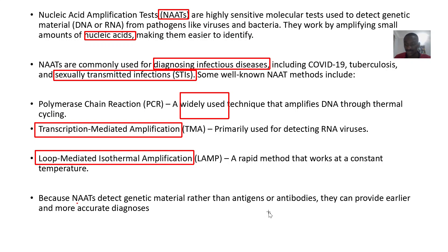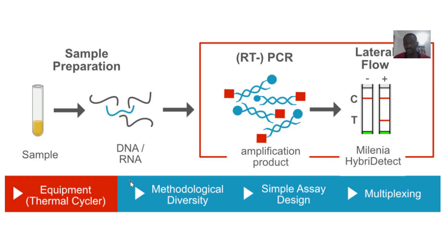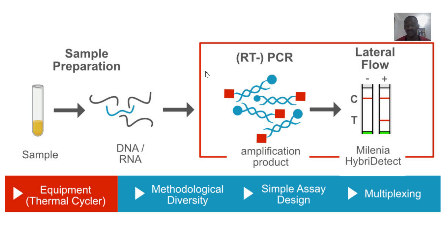Because nucleic acid amplification tests detect genetic materials rather than antigens or antibodies, they can provide earlier and more accurate diagnosis, and have largely replaced older culture sensitivity methods for bacterial infections. Here is a picture you can pause and observe — this is basically for PCR, which is the most popular method among all the types.